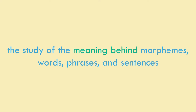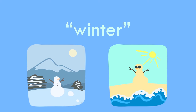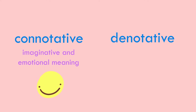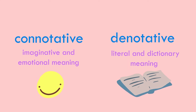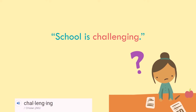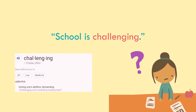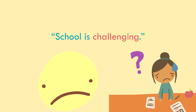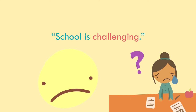Semantics is the study of the meaning behind morphemes, words, phrases, and sentences. Think about how the meaning of 'winter' differs among someone who lives in Colorado and someone who lives in Florida. The two types of semantics are connotative and denotative. Connotation expresses imaginative and emotional meaning, while denotation expresses literal and dictionary meaning. For example, the denotation of 'challenging' suggests school is testing one's abilities or demanding, while the connotation suggests school is not only difficult but also unpleasant. Semantics focuses on how we interpret and draw different meanings from words.